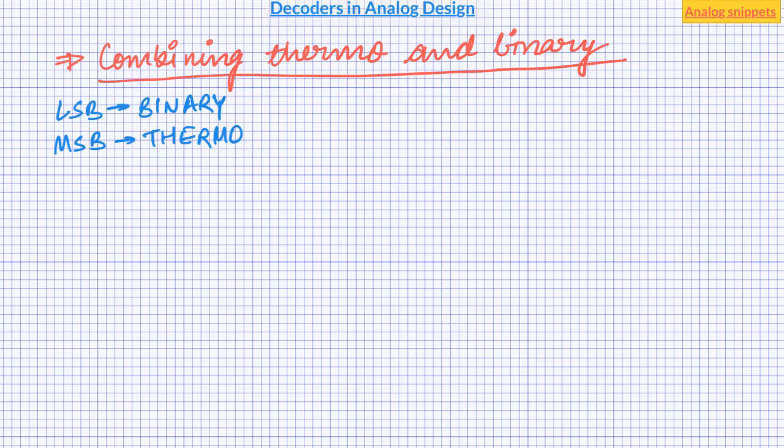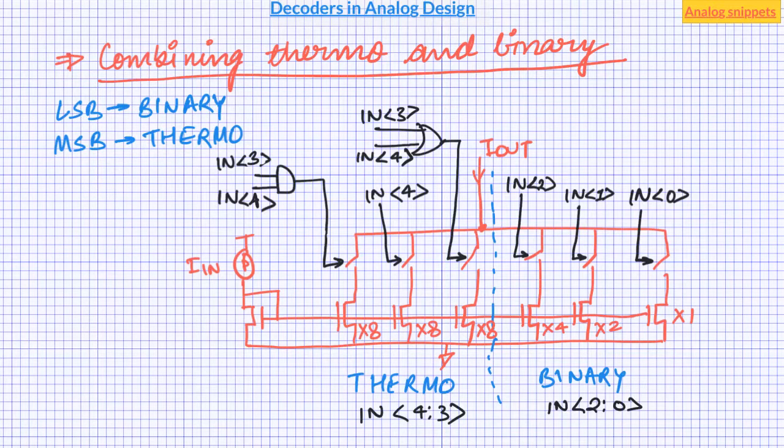As an example let's implement 5 bit programmable current sink using combination of thermo and binary decoders. So here I have used 3 LSBs for binary decoding and 2 MSBs for thermal decoding. And that brings us to the end of the video. So post your comments below and thanks for watching.